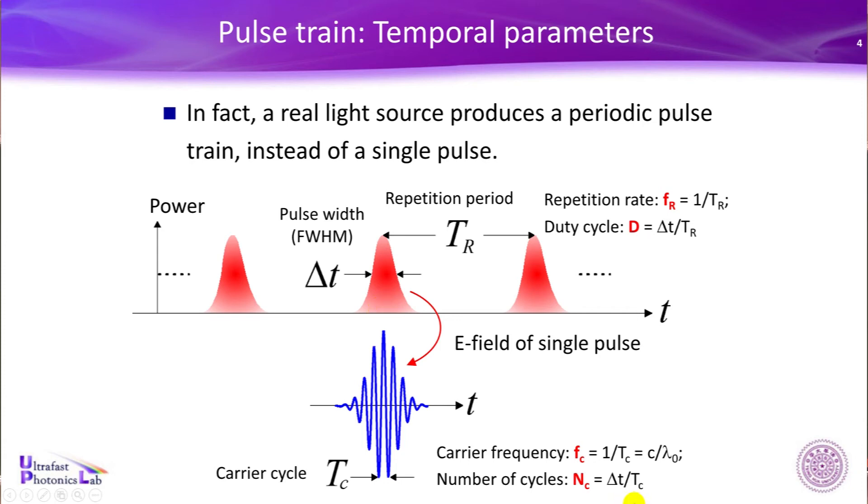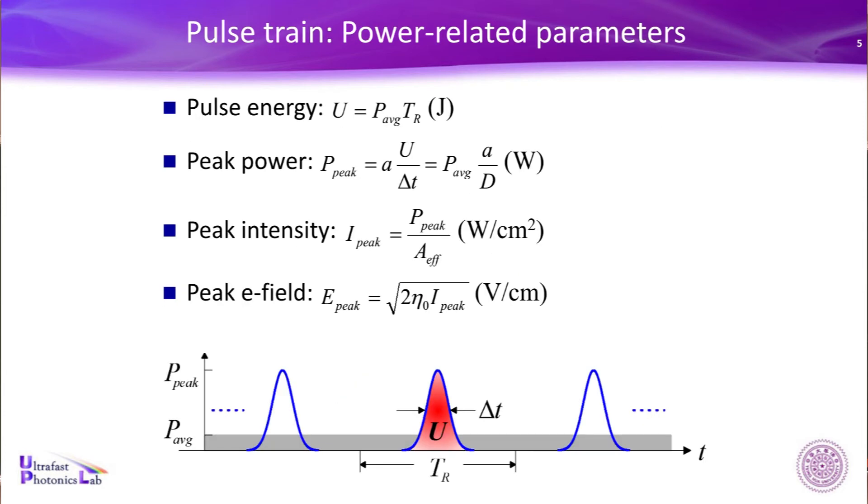And also, by a single pulse, the duration is about Δt, pulse width Δt, but carrier cycle is only TC, so the ratio roughly means under a single pulse envelope how many carrier cycles beneath. This is the number of cycles. So with this single page, I have shown you most of the temporal parameters about pulse train. You know the pulse width Δt, repetition period TR, repetition rate fR, duty cycle D, carrier cycle TC, carrier frequency fC, and the number of cycles NC. So in the future, I will use the same set of symbols to represent the physical parameters. Any question? Good.